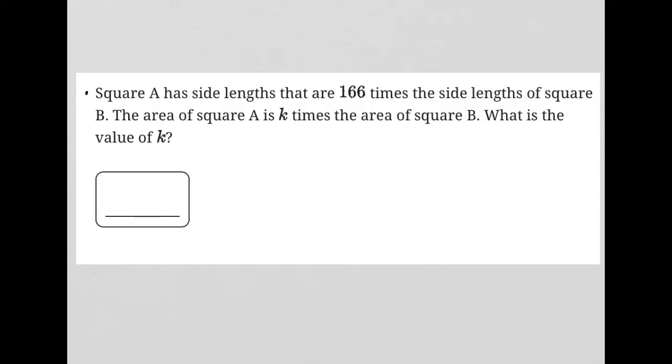So this question says square A has side lengths that are 166 times the side lengths of square B. I'm going to use a strategy of plugging in a picture here because we're describing the square. We're told that we have a square and we're given some information about the side lengths, but there's no picture to reflect that.